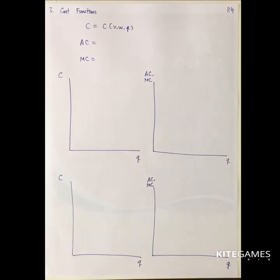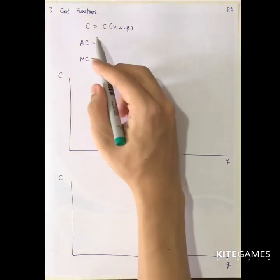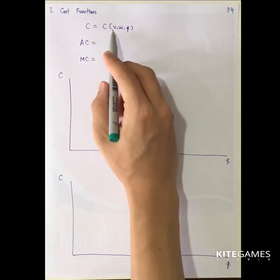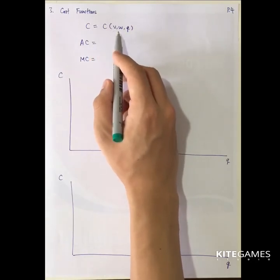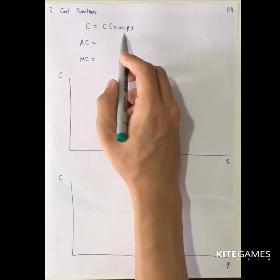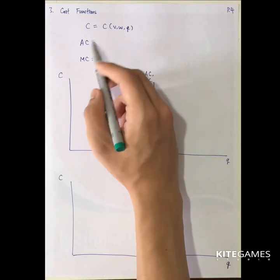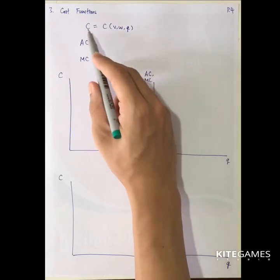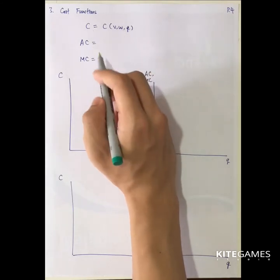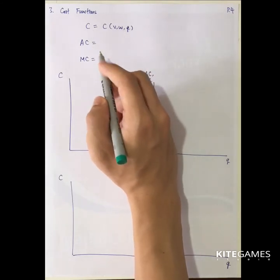Next, we will talk about the properties of the cost function. Basically, we know that cost is a function of V, the rental rate, W, the wage rate, and Q, the output level. So based on the total cost function, we can derive the other two counterparts.